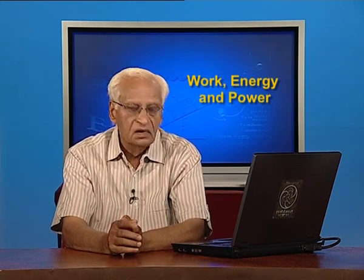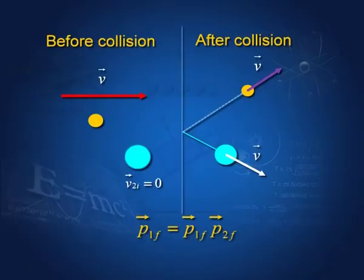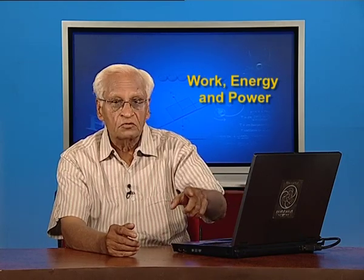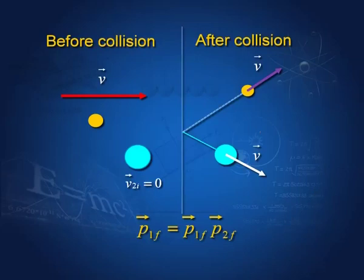We assume that the target particle is at rest. Before collision, the yellow ball is coming and the target is at rest with v₂ᵢ = 0. After collision, the yellow particle moves one way and the blue particle moves another way — both move. The total momentum before collision is just p₁ᵢ since the second particle had zero momentum. After collision, that momentum is shared: p₁ᵢ = p₁f + p₂f.